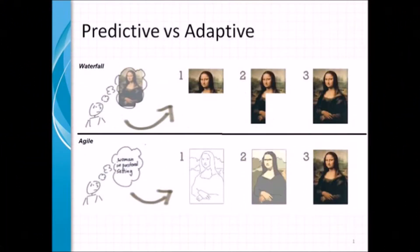I am going to use a simple example of a painting to explain this concept. In the first diagram, the user has a fairly good idea of how the painting needs to look, and starts by drawing and finishing it top to bottom. The entire painting becomes clear only after the last portion is painted.